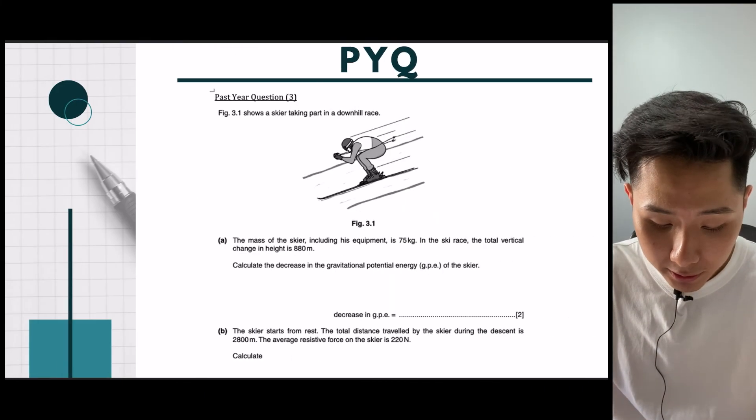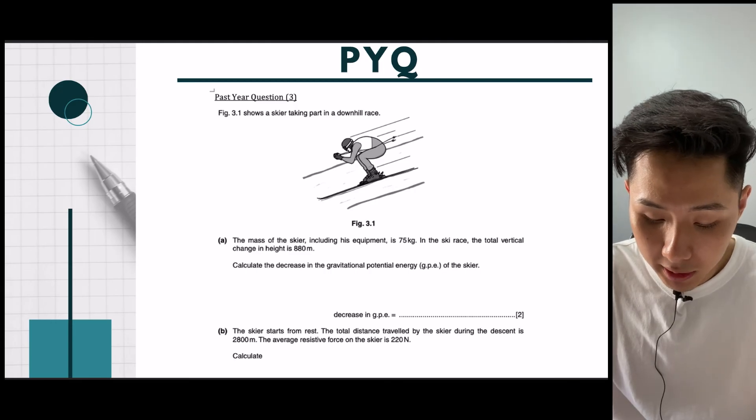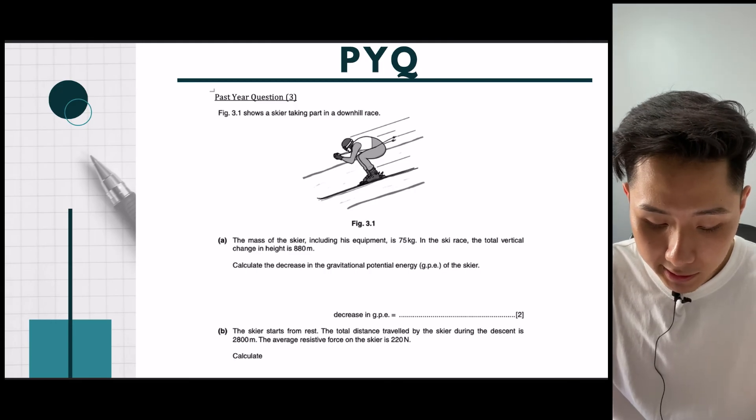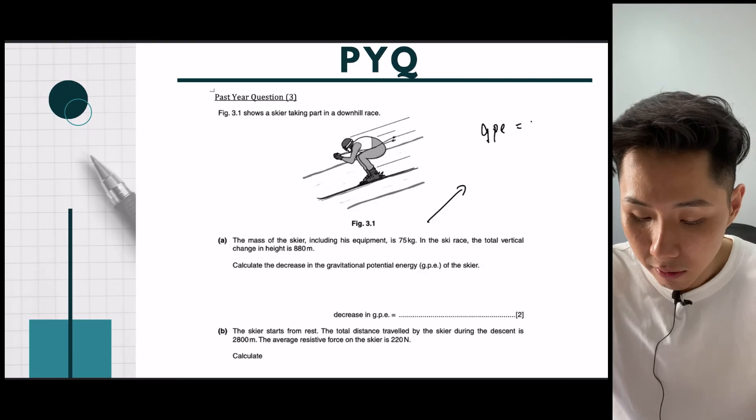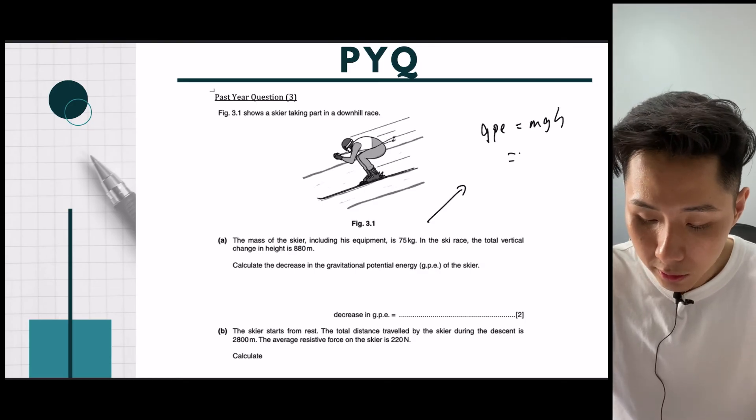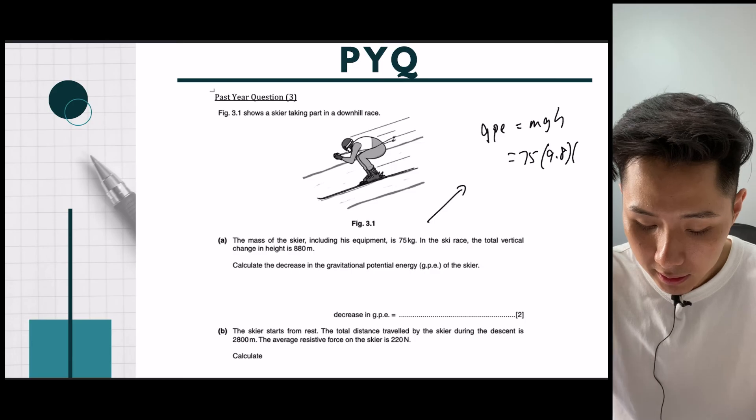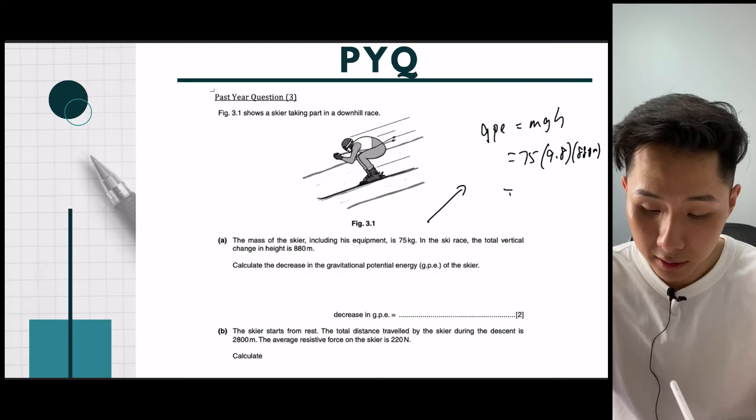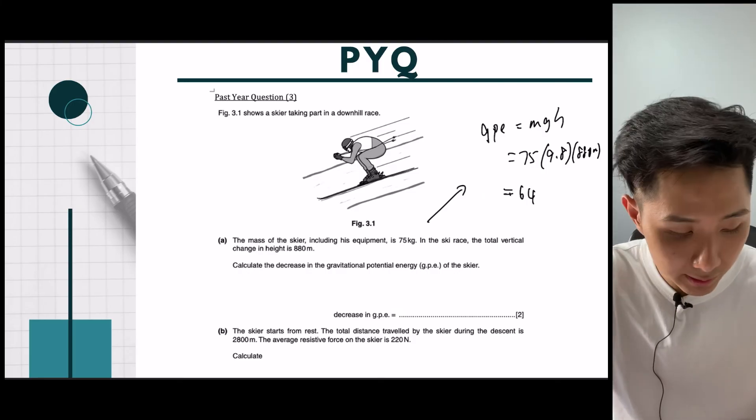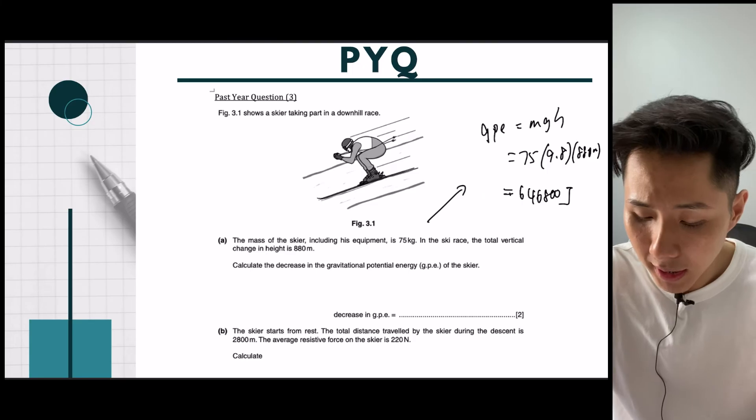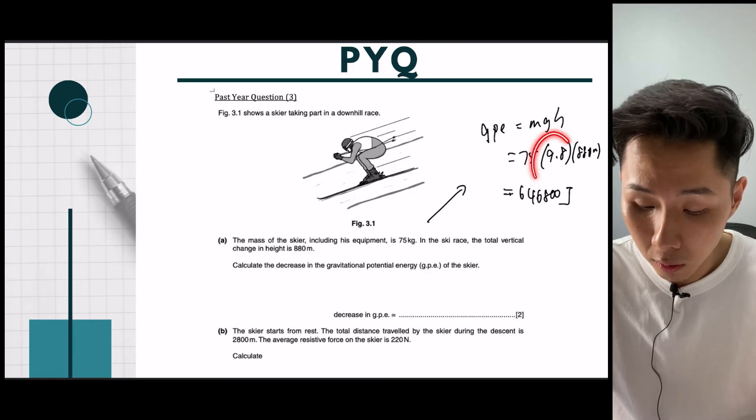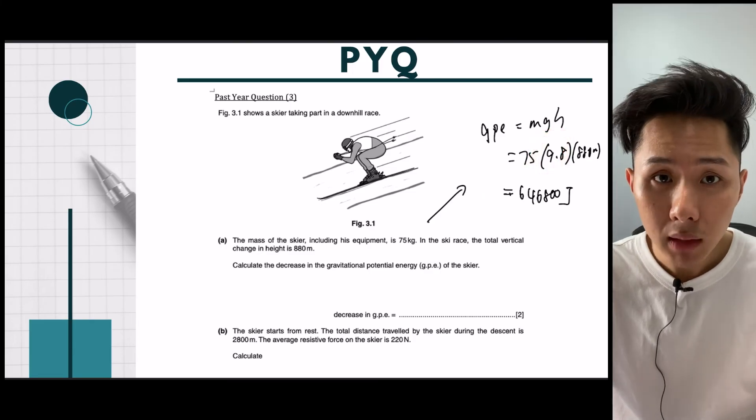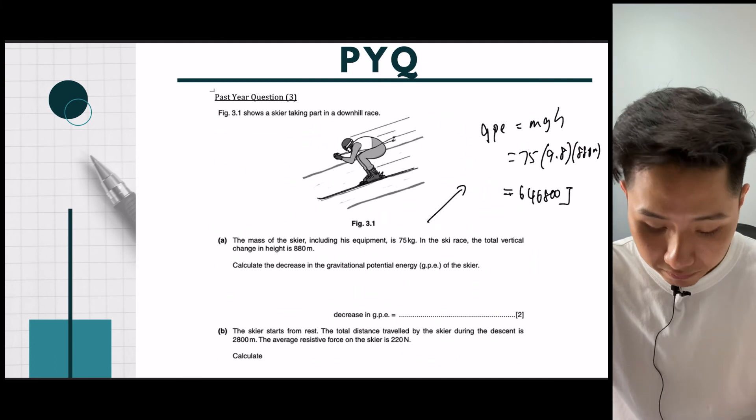Let's move on. The last question. The mass of the skier, including its equipment, is 75 kg. In a ski race, calculate the decrease in gravitational potential energy. Again, GPE. We use MGH. So it is 75 times 9.8 times 880. And if I were to plug that into my calculator, I get this answer. Do note that the answer we get here will be slightly different from the marking scheme, because from 2023 onwards, you need to use 9.8 instead of 10 as your gravitational acceleration.